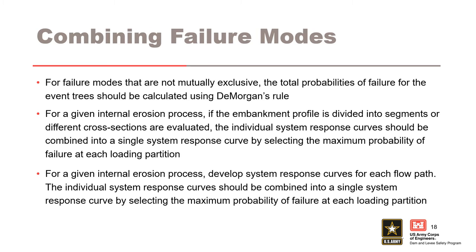For a given internal erosion process — for example, concentrated leak erosion due to a transverse crack in the embankment — develop system response curves for each flow path, such as above and below a filter, or above and below the top of a berm. The individual system response curves should be combined into a single system response curve by selecting the maximum probability of failure at each loading partition. With levees, breach in one location does not necessarily preclude breach in another like it does for a dam. For failure modes of the same internal erosion process, use DeMorgan's rule or, depending on the consequences, consider the intersecting event — both reaches failing at the same time.